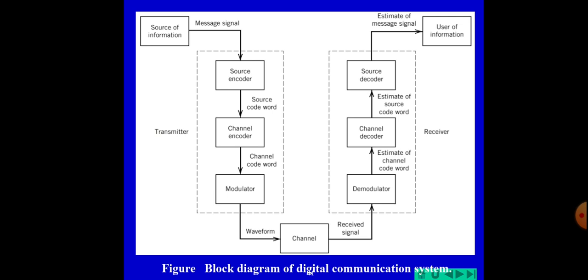The next section is the channel. The channel may be of different types such as wired channel, wireless channel, time-varying channel, and time-invariant channel. Noise will be introduced into the signal as the main consideration during transmission. The signal will be affected by noise as it travels through the channel.